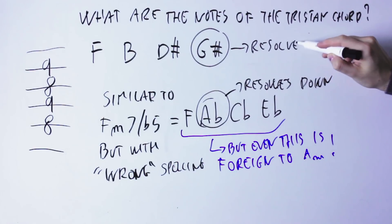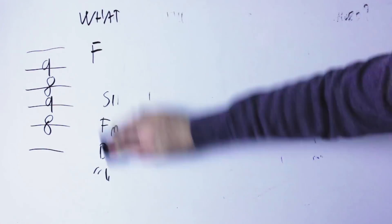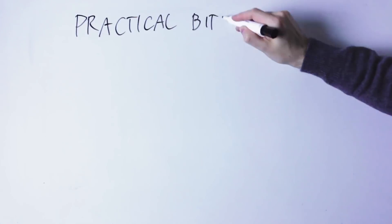Wagner clearly spells the B, D sharp and G sharp notes this way as opposed to C flat, E flat and A flat, because he wants those notes to resolve up and not down. But anyway, here are the practical bits.